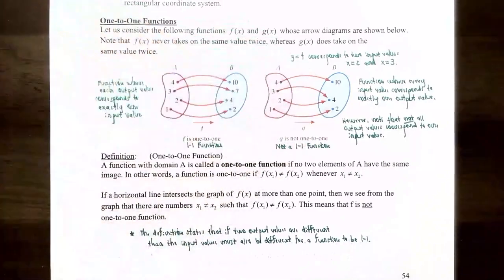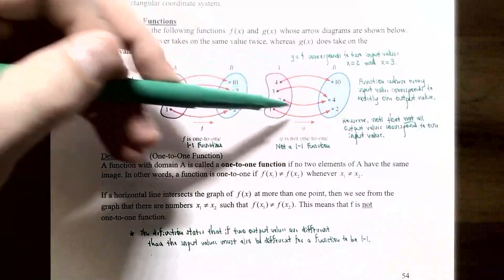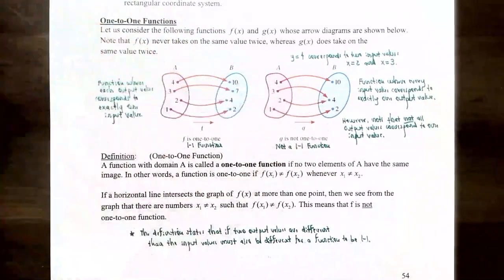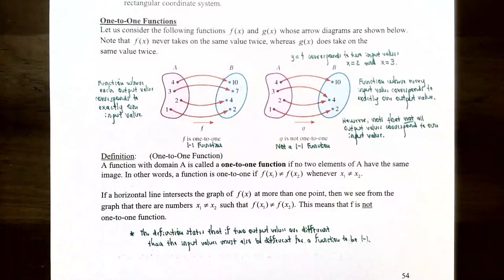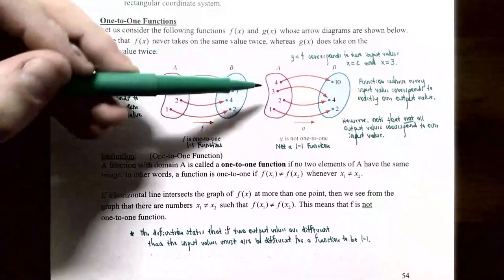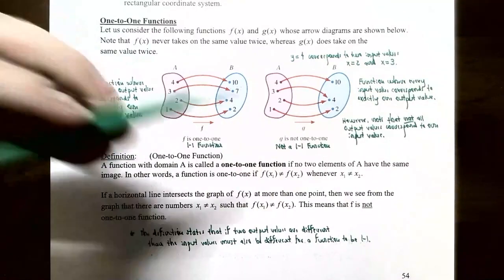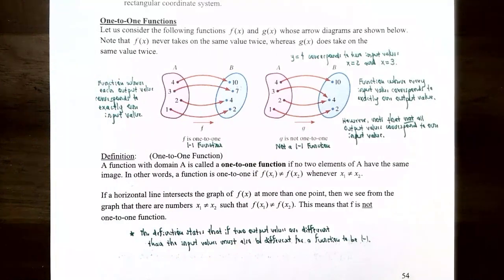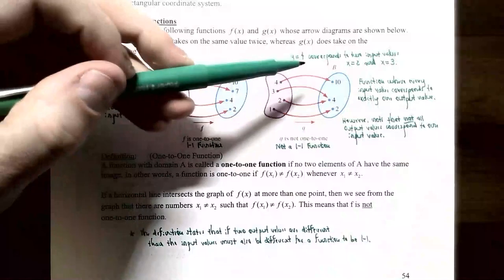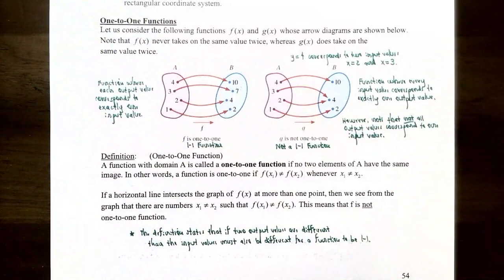However, the function g(x) on the right takes 4 to 10, 3 to 4, 2 also to 4, and 1 to 2. Notice that the y value y = 4 actually has two corresponding x values. The definition of a function says every x value corresponds to exactly one y value — both of these are functions — but y = 4 is used two times for two different x values, x = 3 and x = 2. This is what it means to be one-to-one, or not one-to-one for g(x). A function where each output value corresponds to exactly one input value is called a one-to-one function. If an output value corresponds to more than one input value, it's not one-to-one.